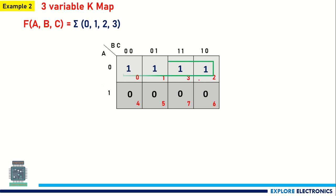After grouping, there are no ones left out. For this group, A corresponds to 0, so I write it as Ā. Looking at B and C values: B is 0, 0 and changing to 1, 1 — neglect B. C is also 0, 1, 1, 0 — neglect C. So Ā is the only expression here, and the output is Ā.